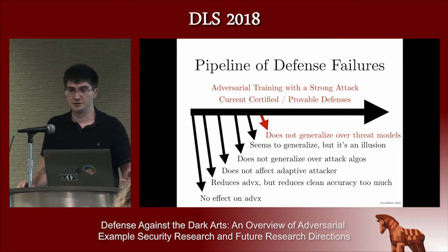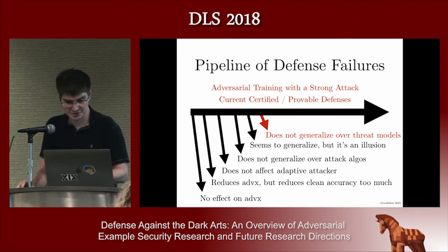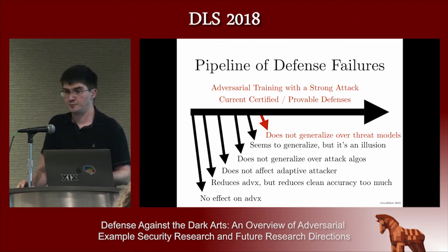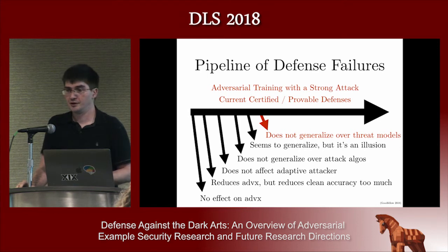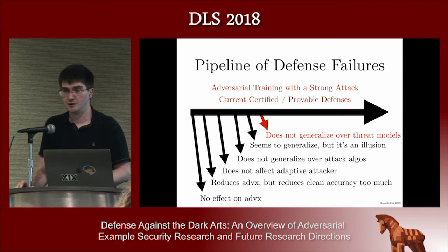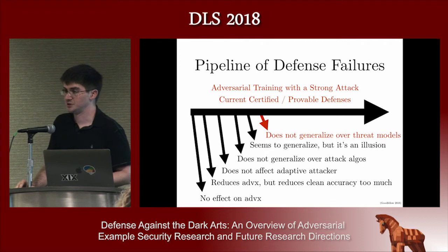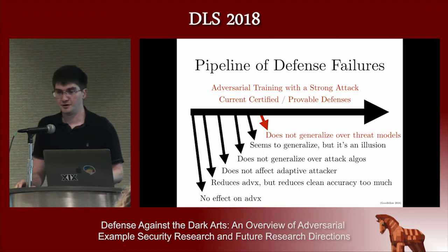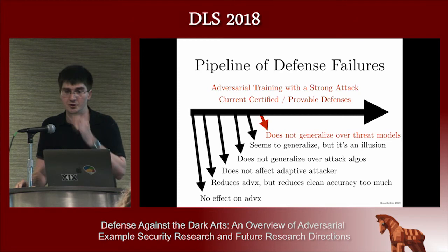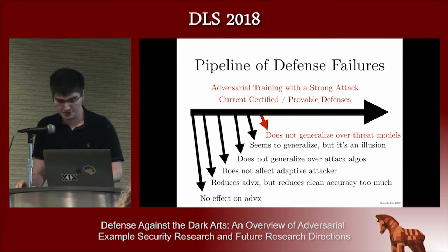Clearly, other stranger attacks can easily beat it as well. The same applies to all certified defenses that exist today — all proof certificates are based on examining the geometry of the neural net and saying it outputs the same class for every point near a specific test input. Because it's based on this geometric idea of nearness according to a specific norm, you can break the certificate by switching to a different attack model not based on norm-constrained attacks.